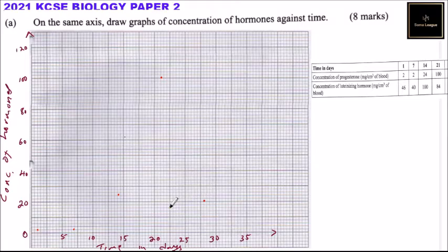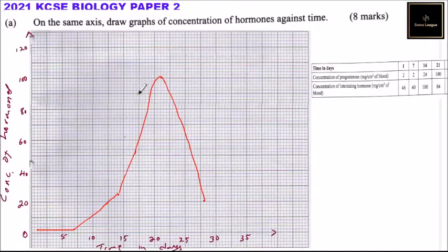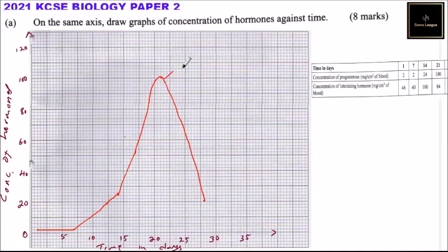Use your freehand to join the points to produce the graph. The resulting curve should look smooth. This graph is labeled 'progesterone.'